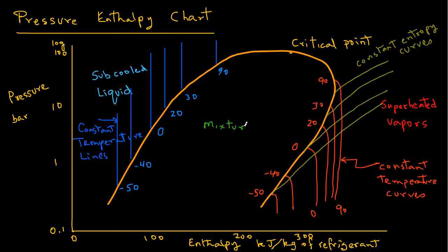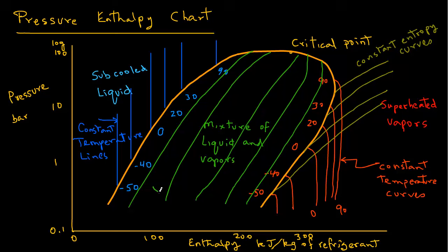Inside the bell shape curve any point represents a mixture of liquid and vapors. We draw these lines within this region and we are going to label them as quality.